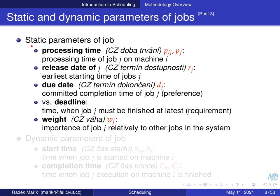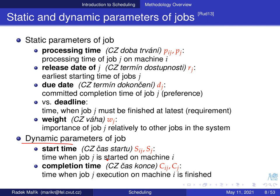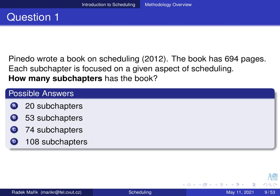Dynamic parameters are derived during the scheduling process. There are basically two of them: start time s_ij or s_j — the time when job j is started on machine i — and completion time c_j or c_ij — the time when job j finishes processing on machine i. These are the two parameters for each job that need to be derived during scheduling.